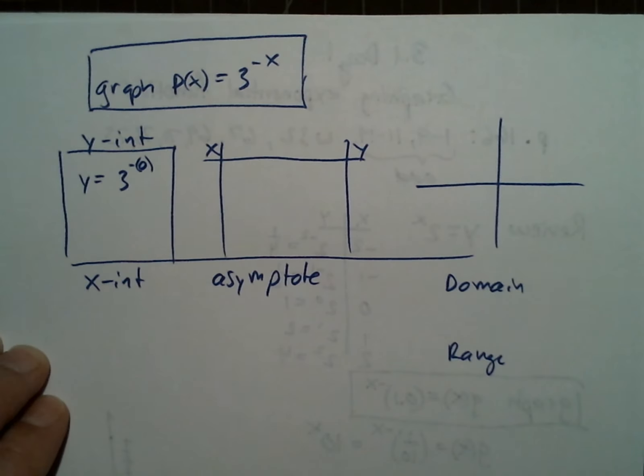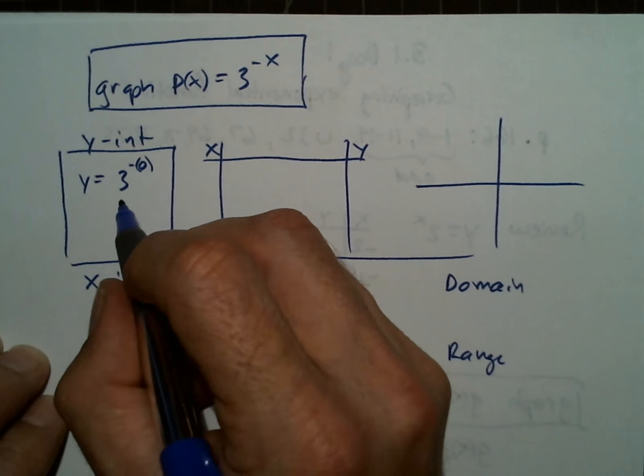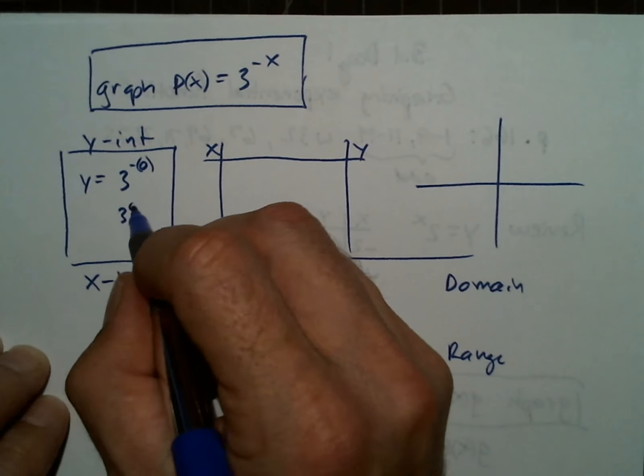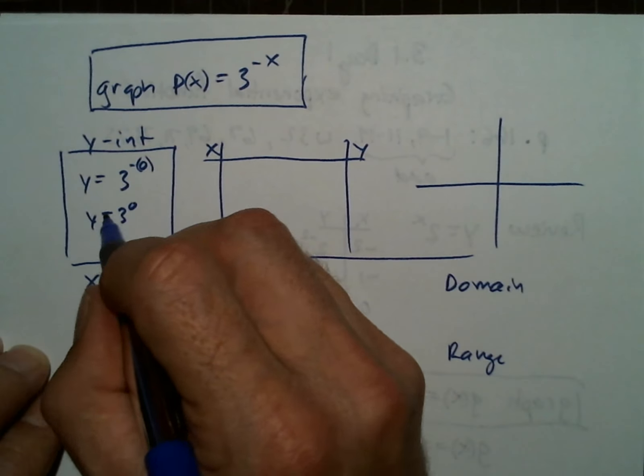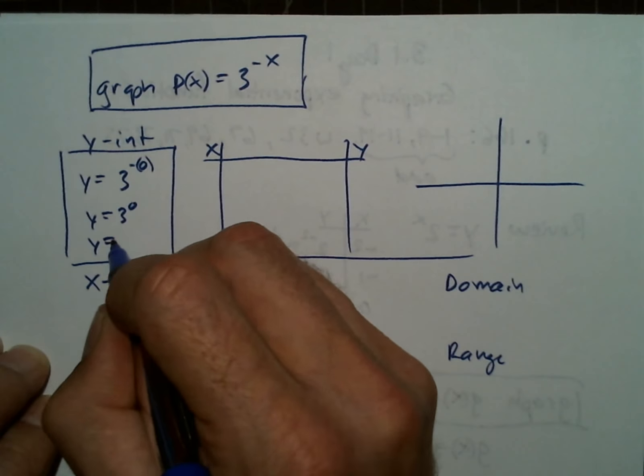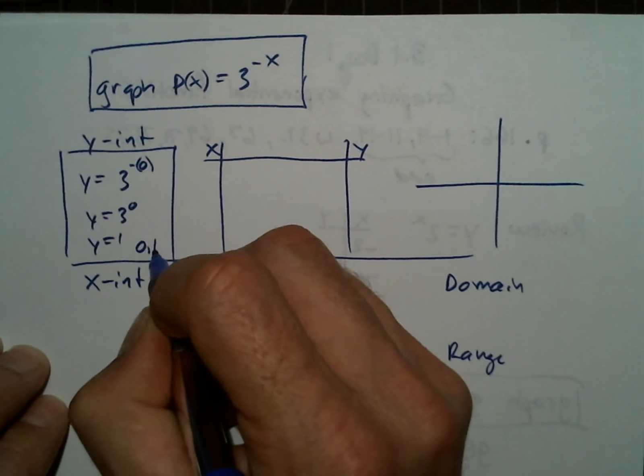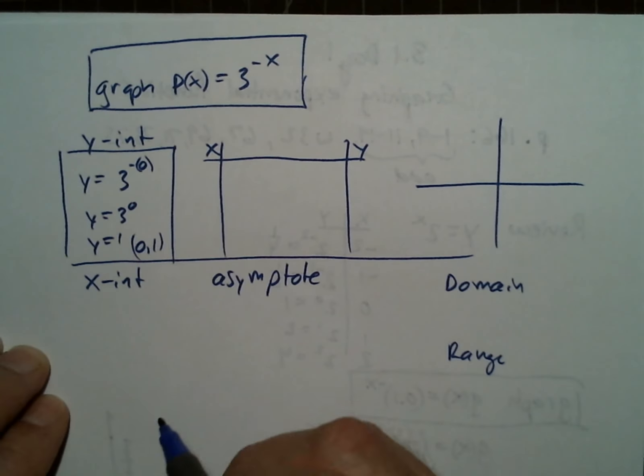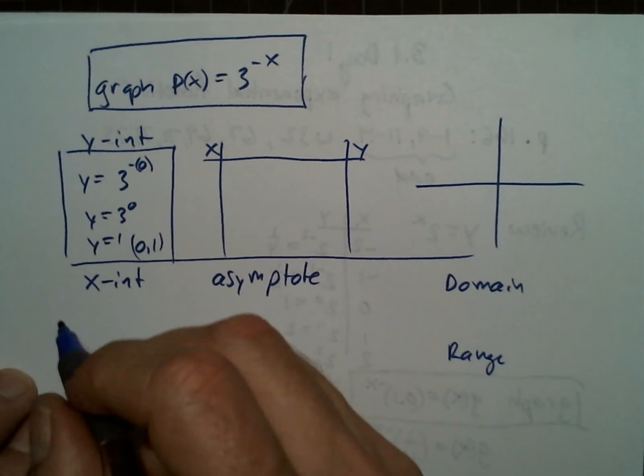Put zero in for x and we get 3 to the 0, which equals 1, so (0, 1) is the y-intercept.